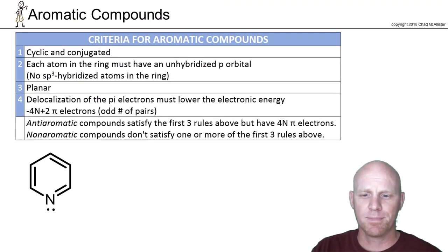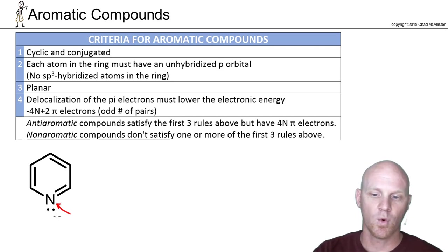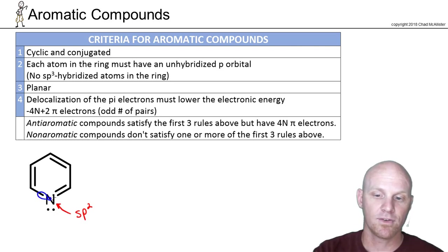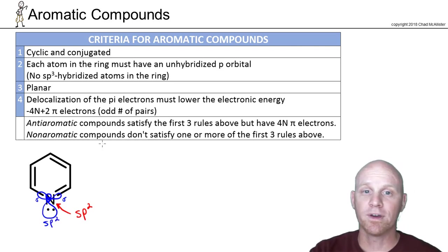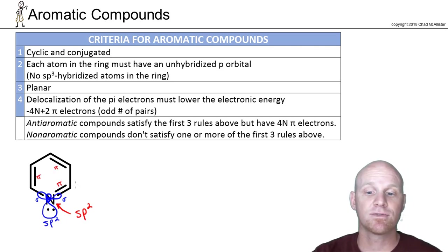Now we're going to look at pyridine, which is an aromatic heterocycle — it has an atom in the ring that is not carbon, in this case nitrogen. The nitrogen has two bonding domains and one non-bonding domain, three domains total, so it's sp2 hybridized. Being sp2, it has three sp2 hybrids: one for each sigma bond and one for the lone pair. So that lone pair is in an sp2 hybrid orbital — it's not in an unhybridized p orbital, and so it's not part of the pi system. The pi electrons come from the three double bonds only.